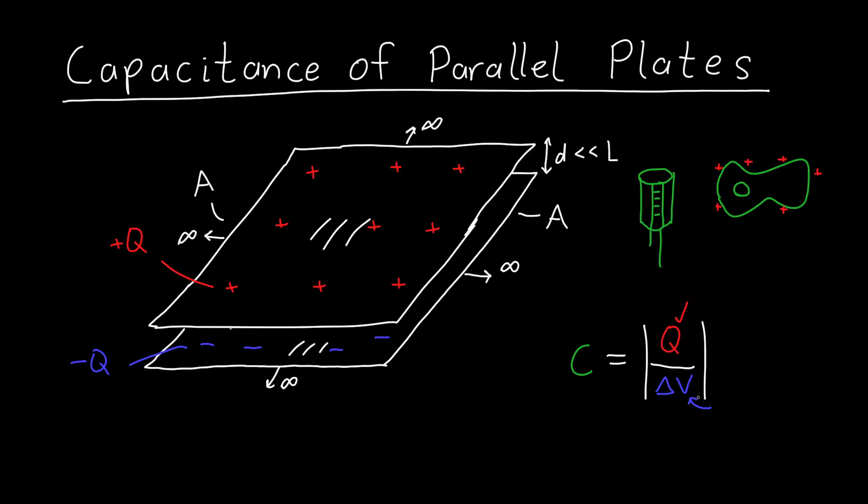So I don't know the potential difference delta V between two plates, but I do know what the electric field is between two plates. I know that it's equal to the charge density sigma divided by epsilon naught. And I went over this in a previous video, if you haven't seen that you can check it out in the link below. And we can use the electric field to find delta V, because we know that delta V is equal to the negative integral of E dotted with dr.